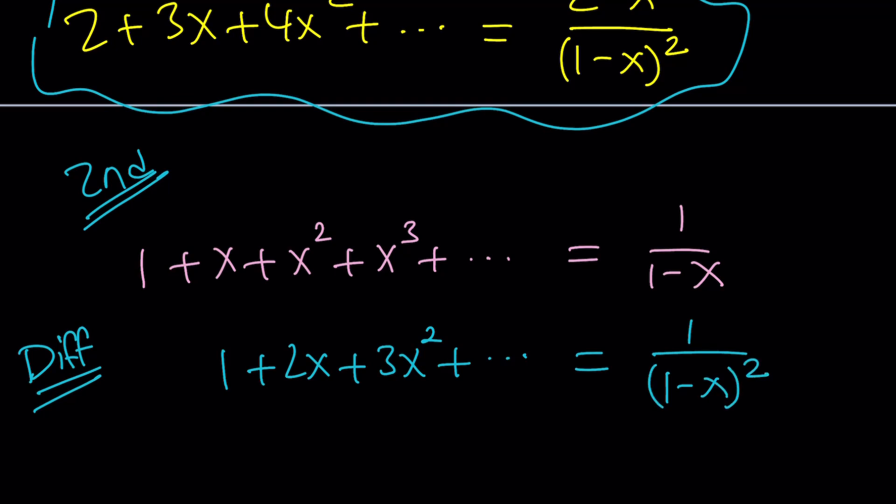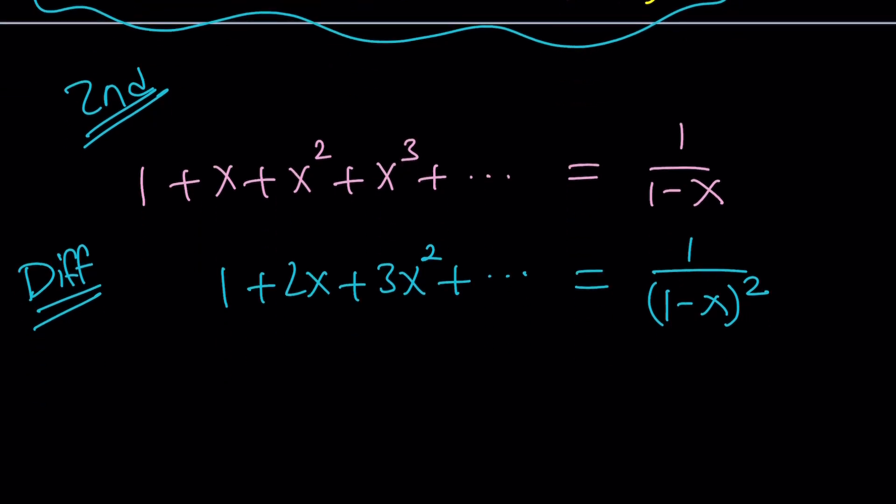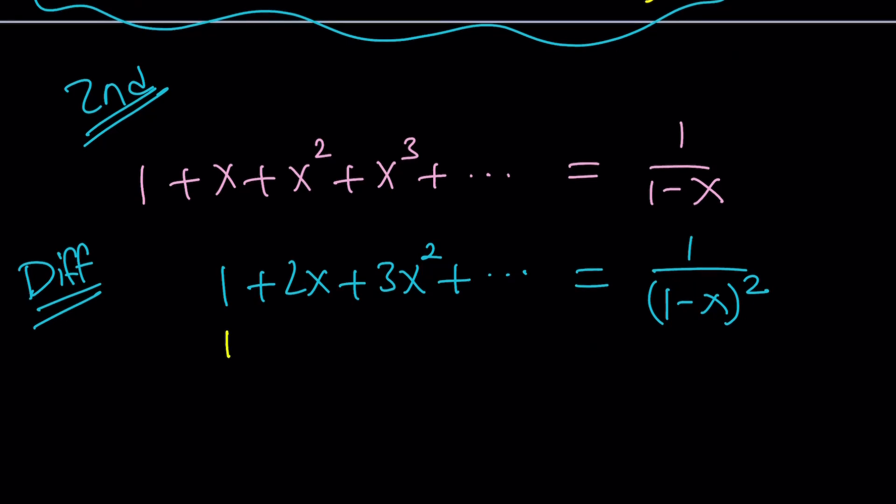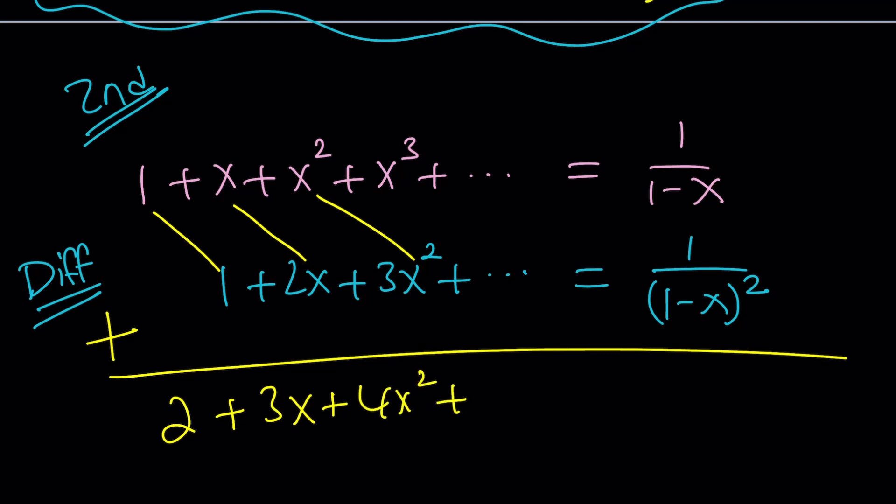Now, I want to get 2 plus 3x. So look what this is missing. I need another 1 here to make a 2. And I do need another x to make a 3x. And I do need another x squared to make a 4x squared. In other words, we're going to add these two sums. If you add these two things, 1 plus 1 is 2, x plus 2x is 3x, x squared plus 3x squared is 4x squared, so on and so forth. So the answer would be 1 over 1 minus x plus 1 over 1 minus x quantity squared.